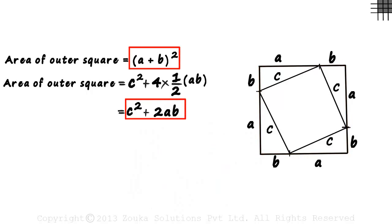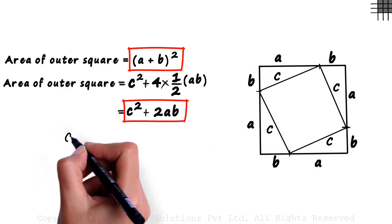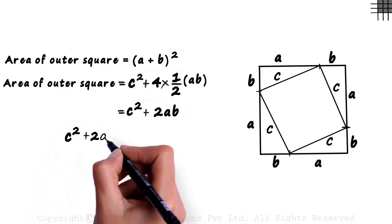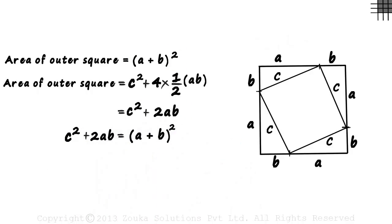Both these are the area of the outer square. Equating these two, we can write C squared plus 2AB equals A plus B the whole squared.